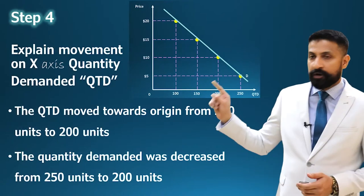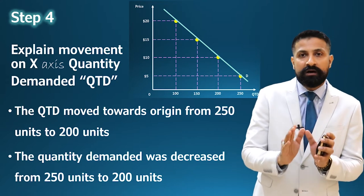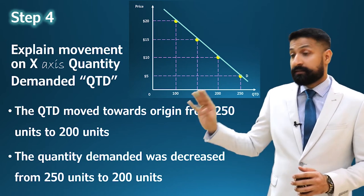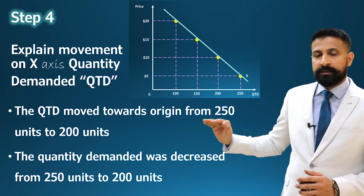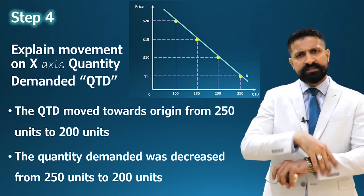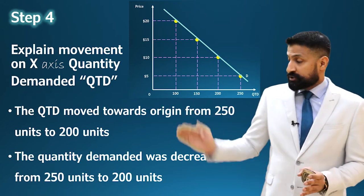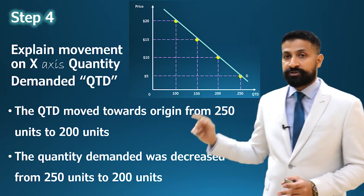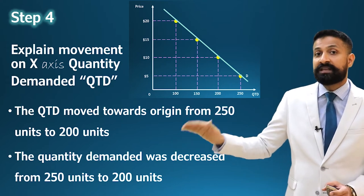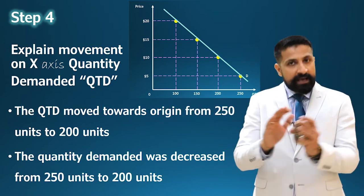Step four: you have to explain the X-axis — the horizontal axis — explaining quantity demanded. There are two preferable ways. The first: 'The quantity demanded moves toward the origin' — keep in mind, the origin is the zero point at the corner — 'from 250 to 200.' The second: 'Quantity demanded decreased from 250 to 200.' That's it — no need to write a long story.